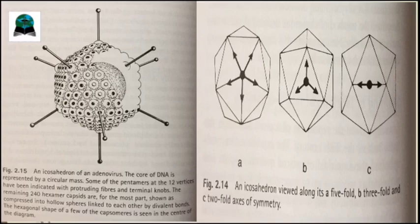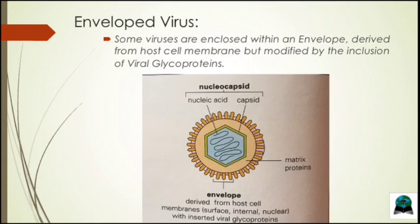The envelope is a lipid bilayer acquired from the host cell membrane during viral maturation by a budding process through a cellular membrane. There are viral-encoded glycoproteins protruding from the envelope and exposed on the external surface of the virion. These glycoprotein projections are called peplomeres, and these are the parts that induce the host's immune response.